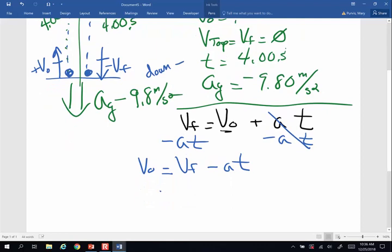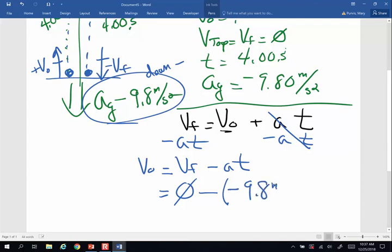And so here goes. Final velocity at the top, because I'm only using half the path, is zero minus my acceleration of gravity. In this case, it slows things down. So it's a negative 9.8 meters per second squared. And all this occurred in 4 seconds.